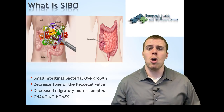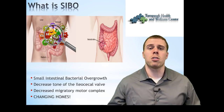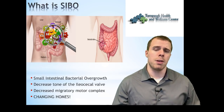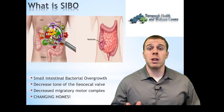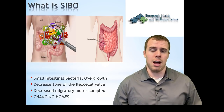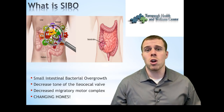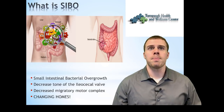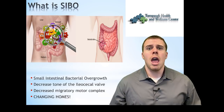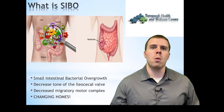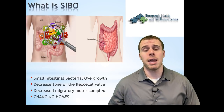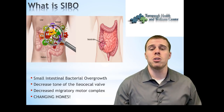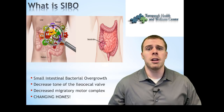The small intestine's primary job is to absorb the majority of the food we eat, whether fat-soluble or water-soluble vitamins and things of that nature. Between the two is a door called the ileocecal valve. When the environment changes — the pH changes, the pressure or tension on the valve changes — it causes that door to open. Now the bacteria from the large intestine changes homes, translocating into the small intestine where it shouldn't be.